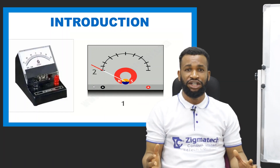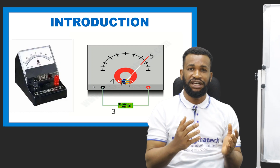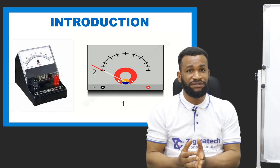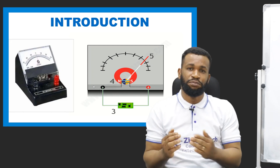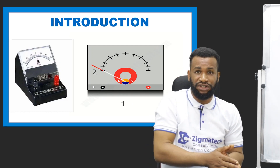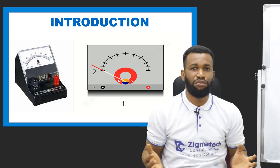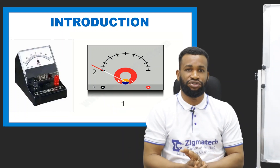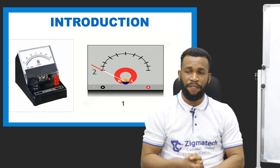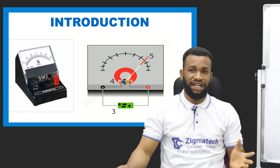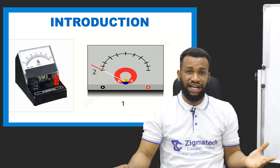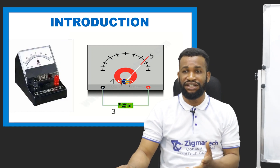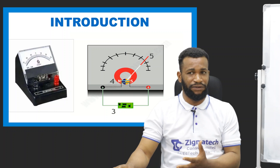Just look at it this way. You have a spring that can carry only 50 kg. If you put 100 kg, it will be too much for it. So what do you do? You add more spring in order to help it carry more load. That is what shunt and multiplier does. In questions, you are going to be hearing 'full-scale deflection.' What you are seeing here is exactly what full-scale deflection is all about — it starts from 2 and goes all the way to 5.